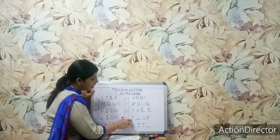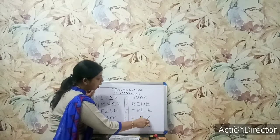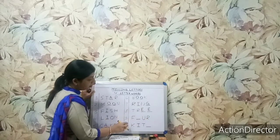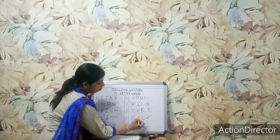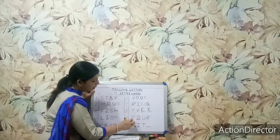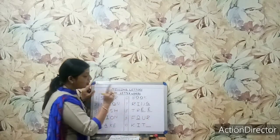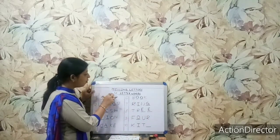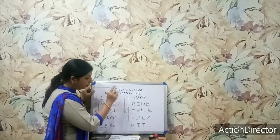Number 9: F-dash-U-R. Now, if I write here O, it will become F-O-U-R — 4. The number 4, this number.